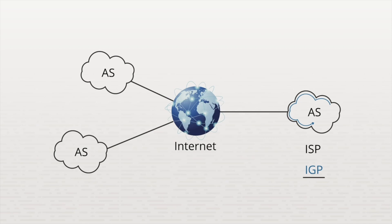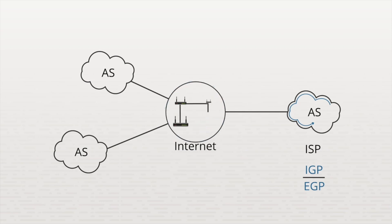An Exterior Gateway Protocol, or EGP, is used to share routing information between autonomous systems. For example, a routing protocol used within the Internet to route data between Internet routers and into autonomous systems would be running a routing protocol classified as an EGP. As a network administrator, you will mostly work with IGP routing protocols. The only situation where you would work with EGP is if you had a very large network connected to the Internet.